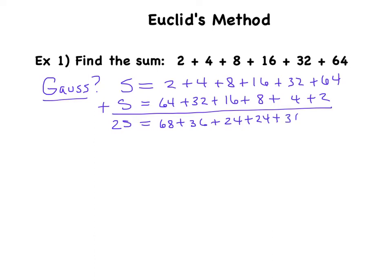Hopefully now you notice what's different about this sequence of numbers when you compare it to the other ones we did using Gauss's method. These are all not the same, so we can't use Gauss's method because it only worked when we had the same number occurring once we added these paired numbers together.